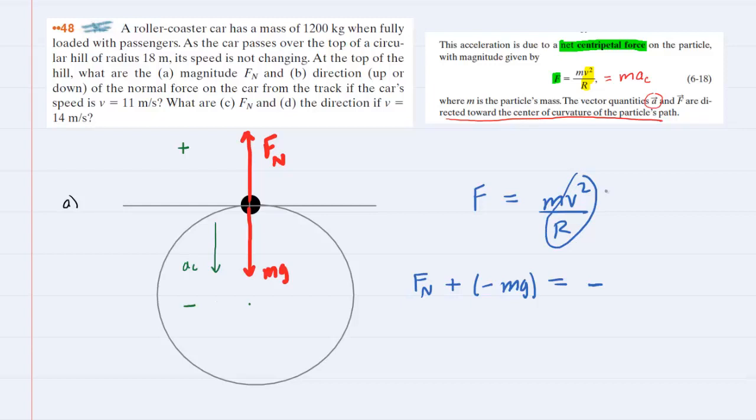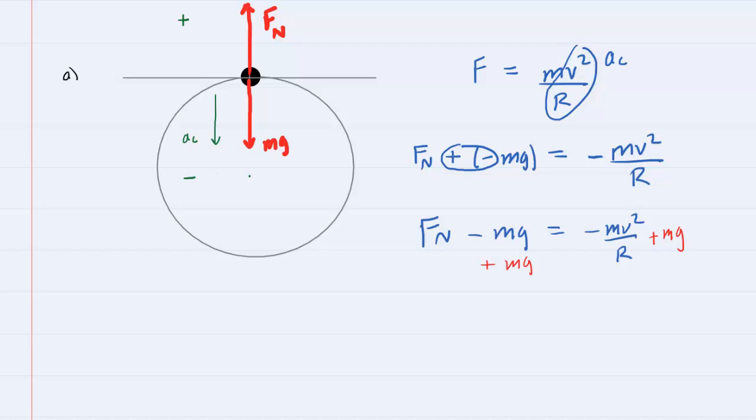This v squared over r is the centripetal acceleration. But we need to make it negative because it's pointing down. So we will write this as negative mv squared divided by radius. And since we are asked to solve for normal force, we will solve this equation for the normal force. We're adding a negative quantity here, so we can write this as Fn minus mg. And then to solve for Fn, we will add mg over to the other side. These will cancel out here, and so we can now see that the normal force will equal negative mv squared over r plus mg.